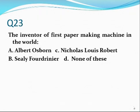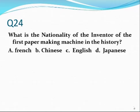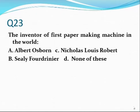Number twenty-three. The inventor of the first paper-making machine in the world — Charlie. It was Nicholas Robert. However, his invention was sold to Fourdrinier. Nicholas Robert was the first inventor, but the rights were taken by Fourdrinier later.